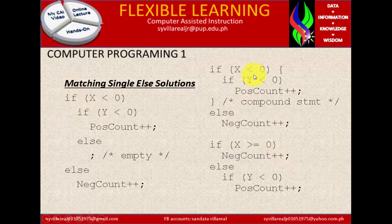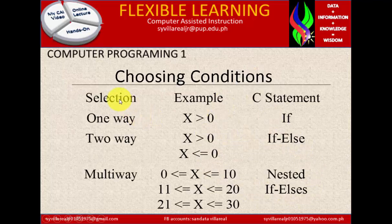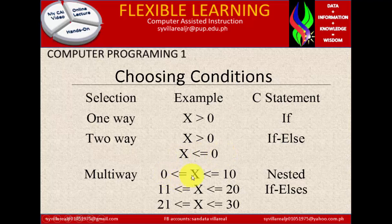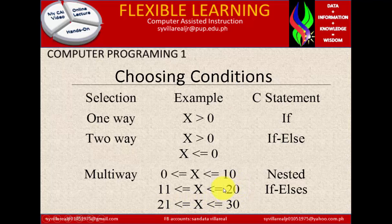The answer is: the previous is not single else but multi-way. The last part is a single way. Choosing condition selection — example of statement types: one-way, x is greater than 0, if. Two-way, x is greater than 0 / x less than or equal to 0, if-else. Multi-way: 0 less than or equal to x and less than or equal to 10. Nested if-else means continuation — from 10, next is 11, divided by 10, so less than or equal to x and less than or equal to 20. That is 10. And right here, 21 by 10 — it's nested, meaning continued.